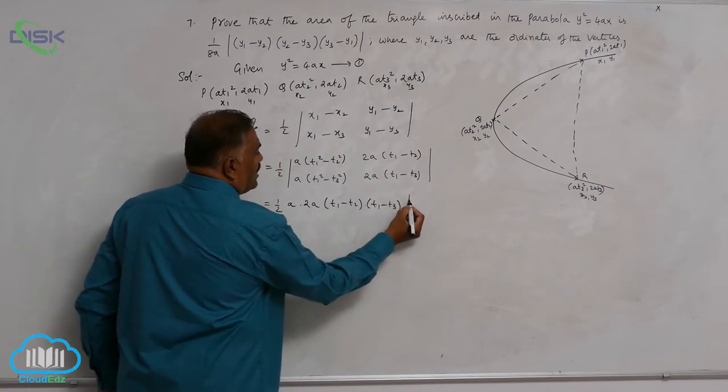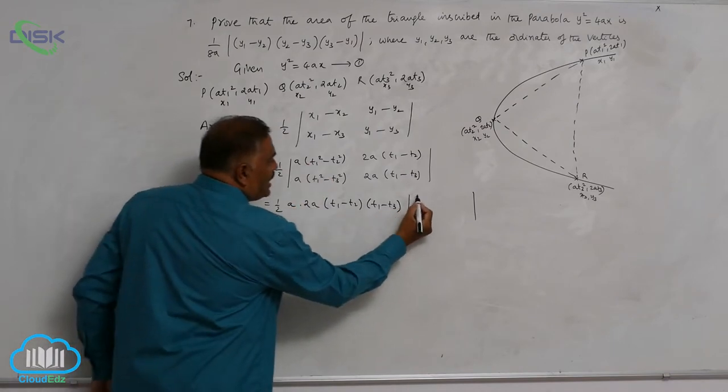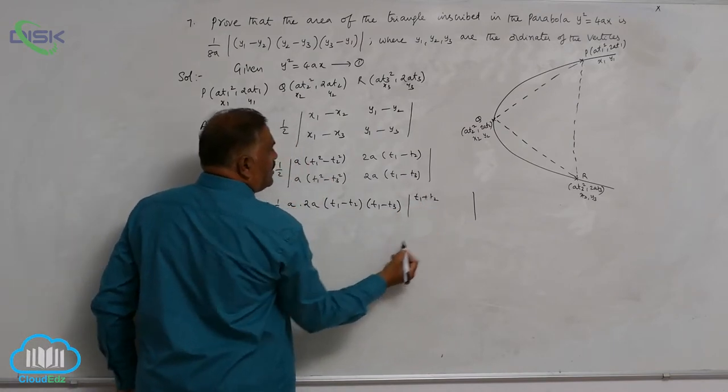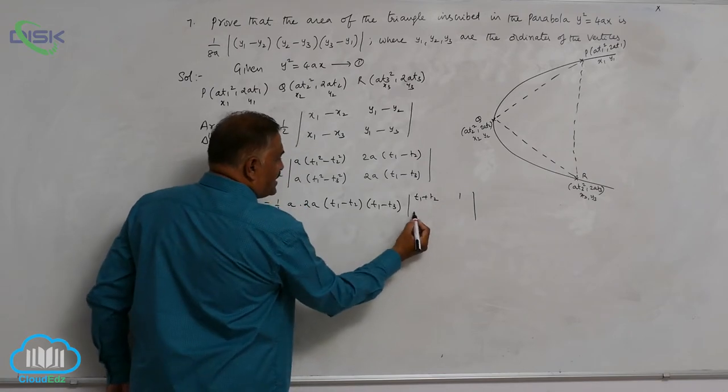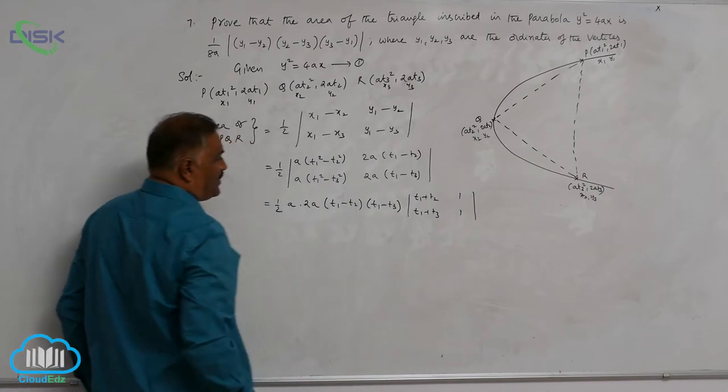If you take, the leftover terms are going to be, here a came already. Only t₁ plus t₂ will be remaining. Here it is 1. Here it is again t₁ plus t₃. Again, this is going to be 1.